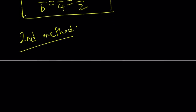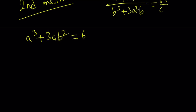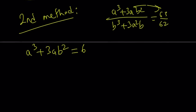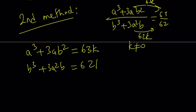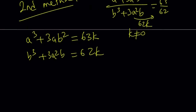My second method is a little different because we're going to be solving a cubic equation, which is not always easy to do. Since our ratio is 63 to 62, I can set the numerator equal to 63k and the denominator equal to 62k, where k is not equal to 0, because the ratio is always going to be 63 to 62. Since this is a homogeneous equation, I'm going to replace a with b times u.